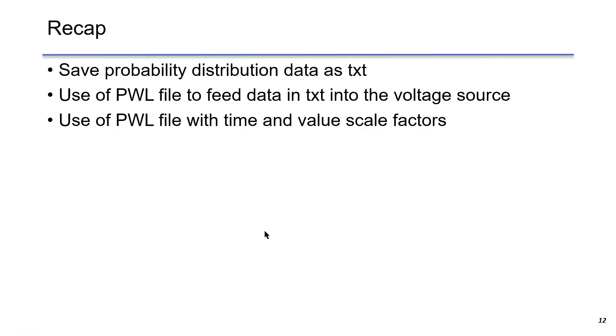Just to recap, in this lecture, we show you how to save probability distribution data as a text file. We use the voltage PWL file to feed data into the voltage source, and we use the PWL file with time and value scale factors. By doing this, we can shrink or stretch the data points in both X and Y dimensions.